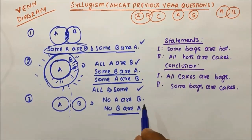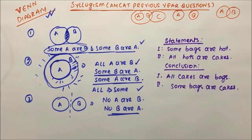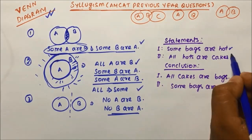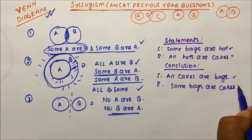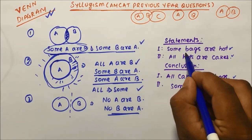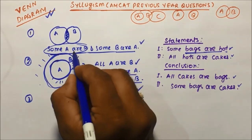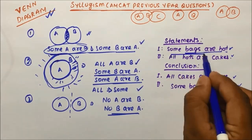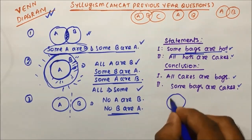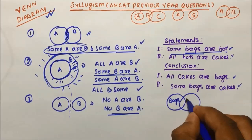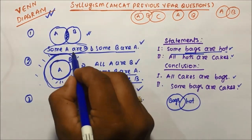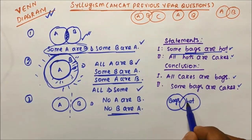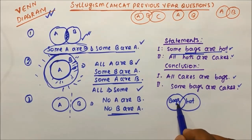These are the three thumb rules for syllogism to solve questions using Venn diagrams. Now let's solve the questions. There are two statements followed by two conclusions — you have to tell which conclusion is true and which is false. The first statement is 'some bags are hot.' Since it is 'some A are B,' we draw two intersecting circles — this is bags and this is hot.